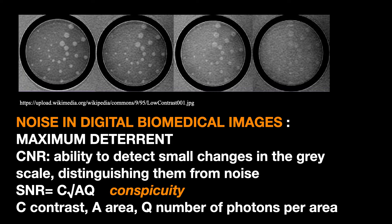Given that signal-to-noise ratio is equal to C (contrast) times the square root of A (area of the object) times Q (photons number per area), we can understand why improving contrast means improving signal-to-noise ratio, which is in fact the more significant parameter to measure the ability to detect an object, called conspicuity.